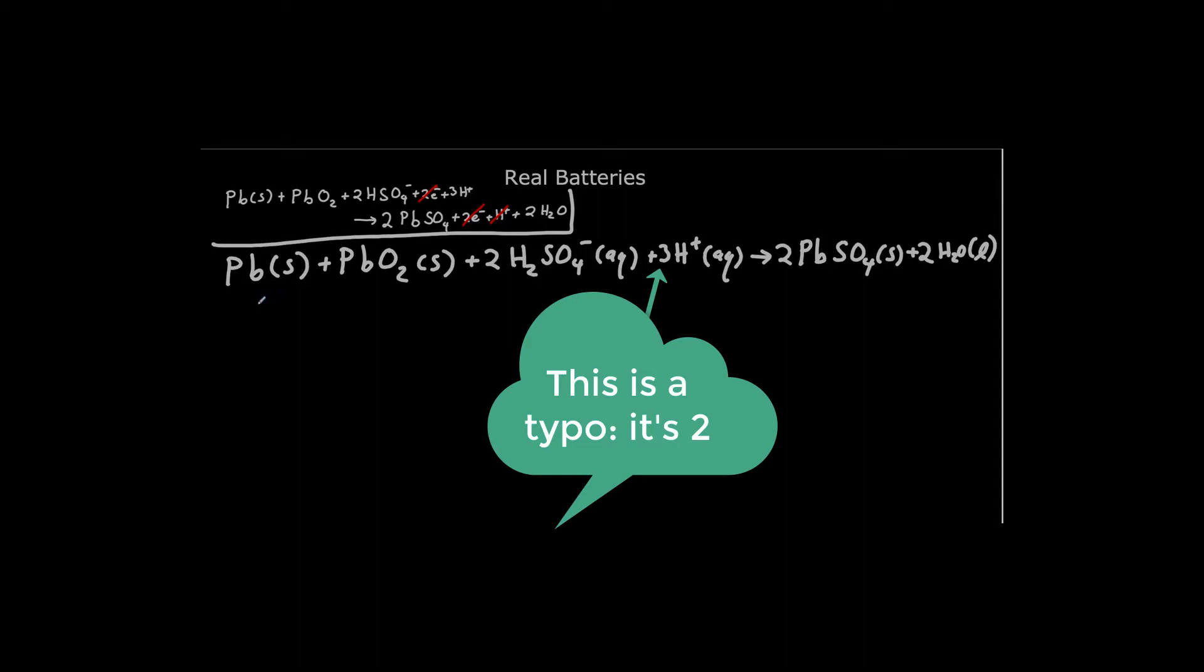So let's write Q for this. So you're going to need Q for the Nernst equation to see how the voltage varies with composition and hence with time. Take a few seconds, pause the video, and write out the expression for Q.